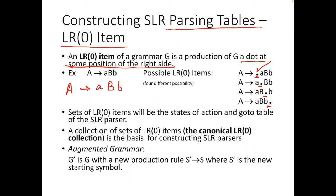The set of LR0 items will be the states of the action and goto table of the SLR parser. A collection of sets of LR0 items is called the canonical LR0 collection, and it is the basis for constructing the LR parser. So LR0 item sets are the basis for constructing the SLR parser — this shows the relationship between LR0 and SLR.